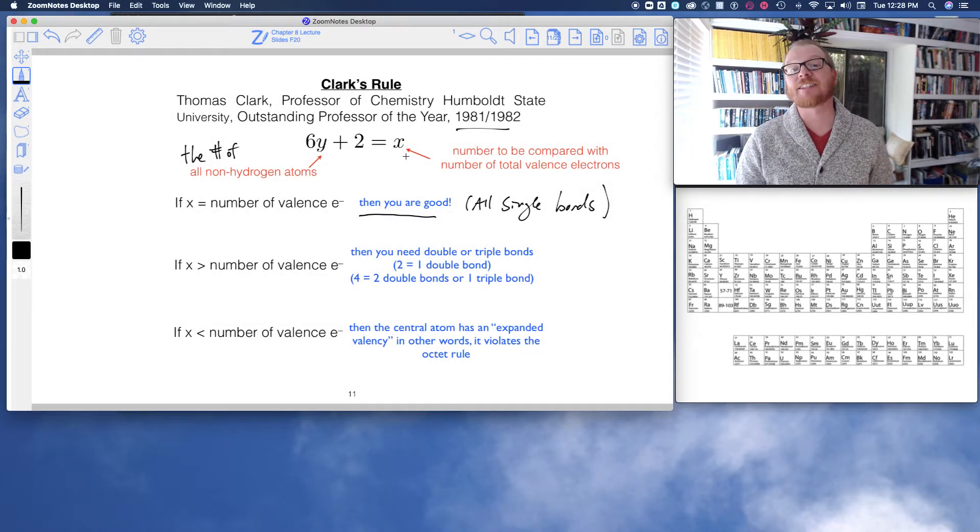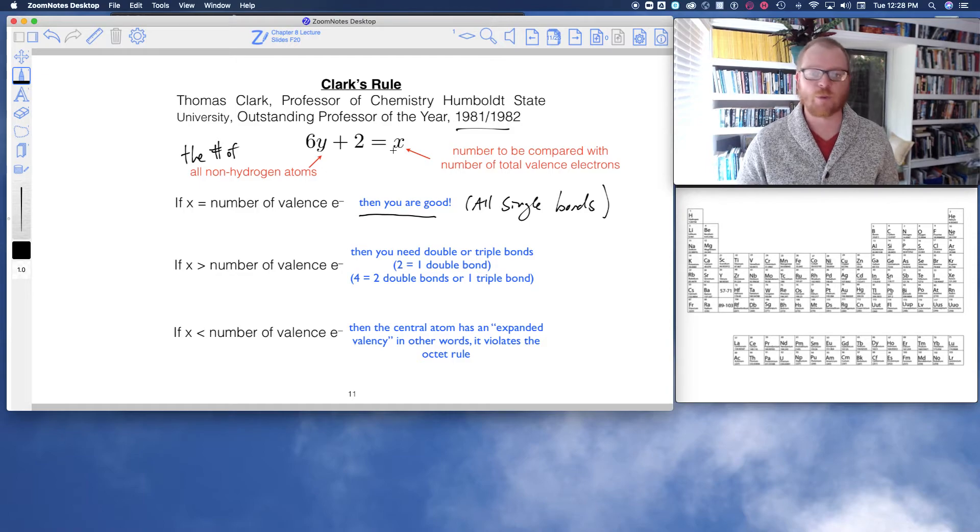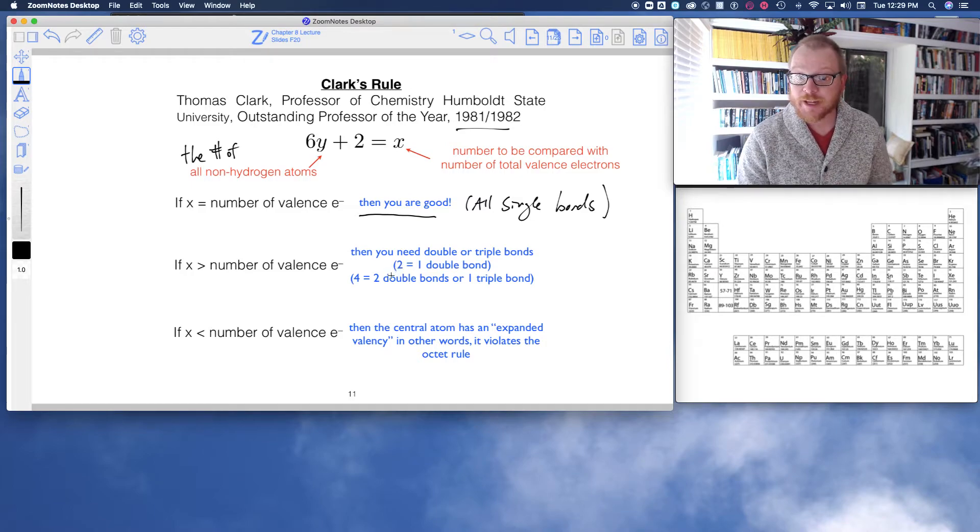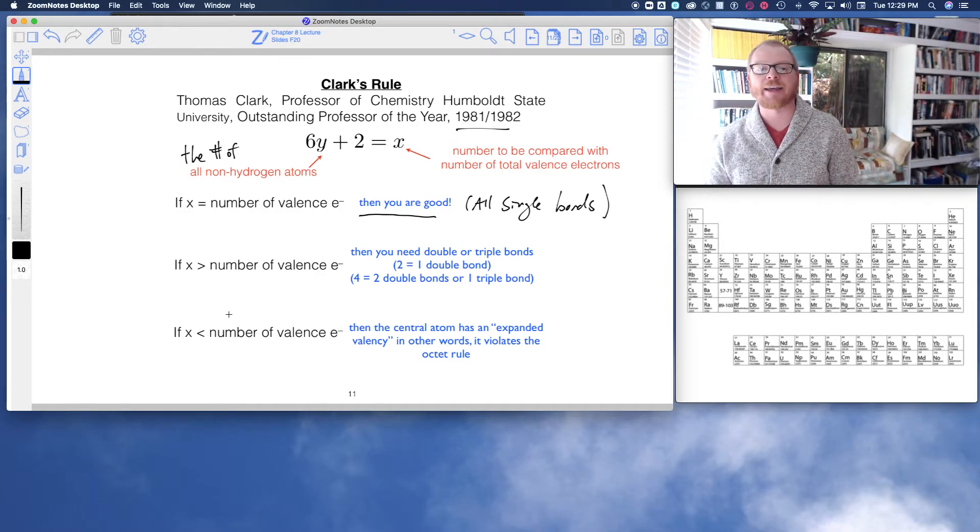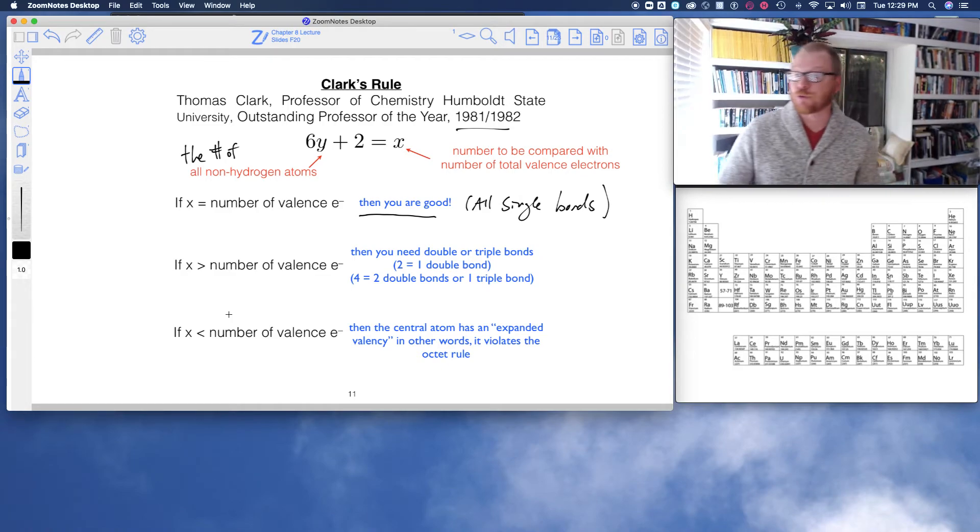So, what if x does not equal the number of valence electrons? Well, this is where this rule is very useful. If x is greater than the number of electrons, then that means we need double bonds. And there's a really nice pattern with this. If x is greater than the number of valence electrons by 2, then that means we need one double bond. If x is greater than the number of valence electrons by 4, then we either need two double bonds or one triple bond. And so forth. If x is greater than valence electrons by 6, that could be three double bonds or two triple bonds, et cetera.